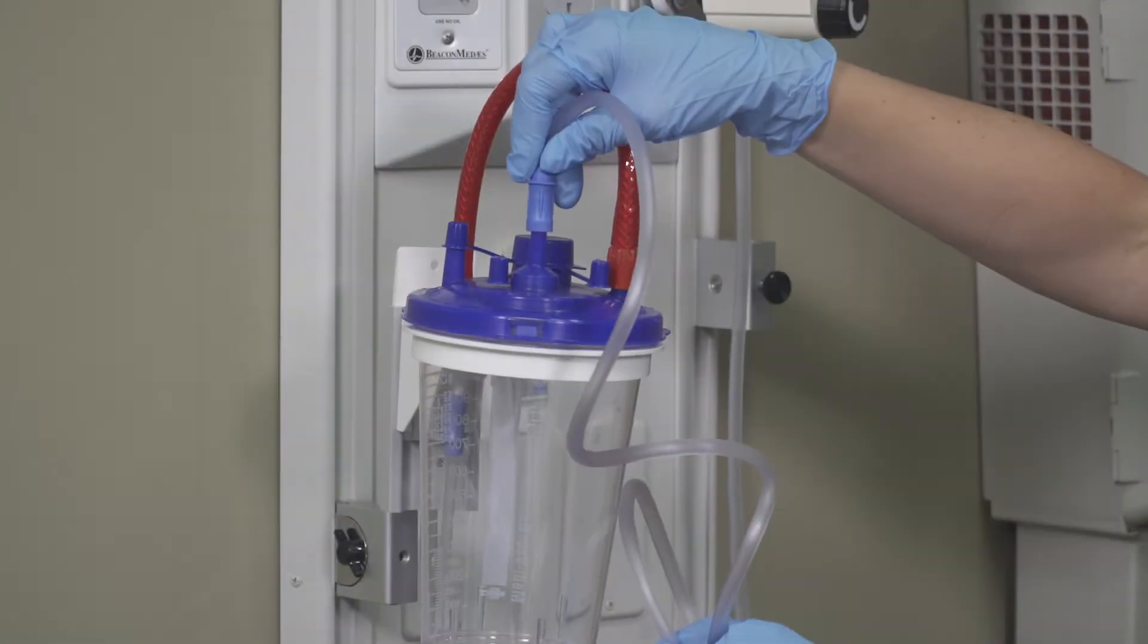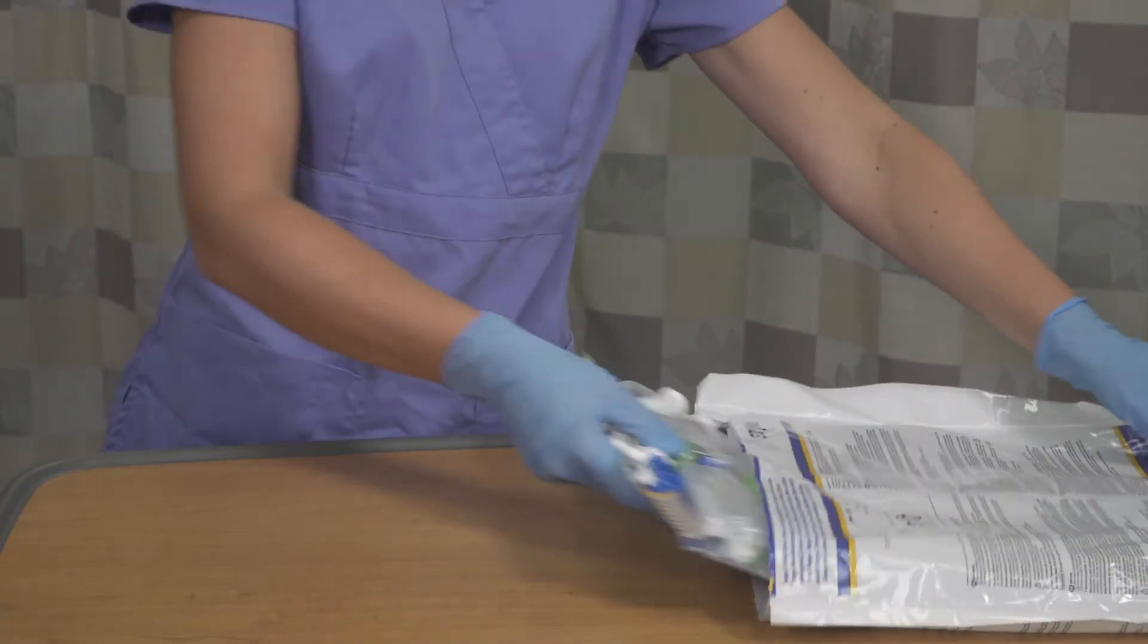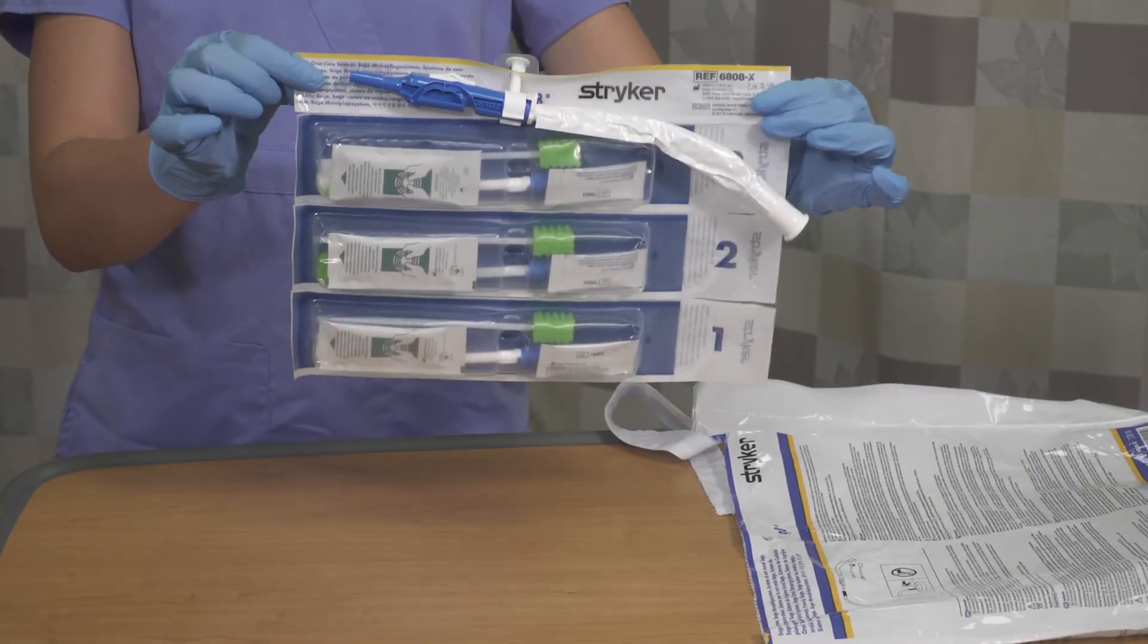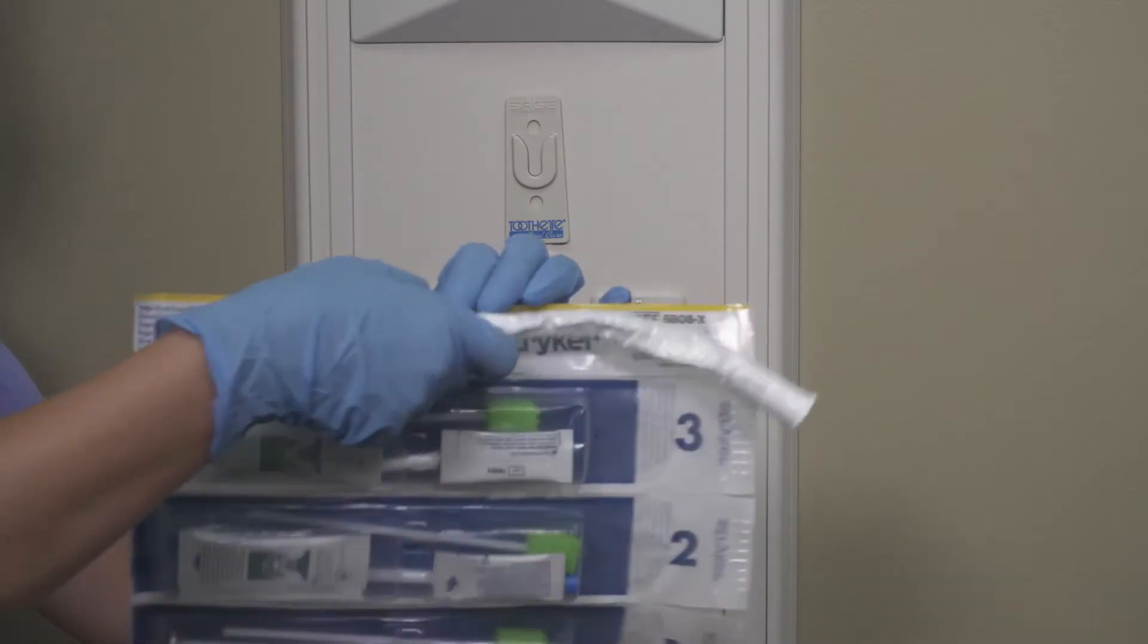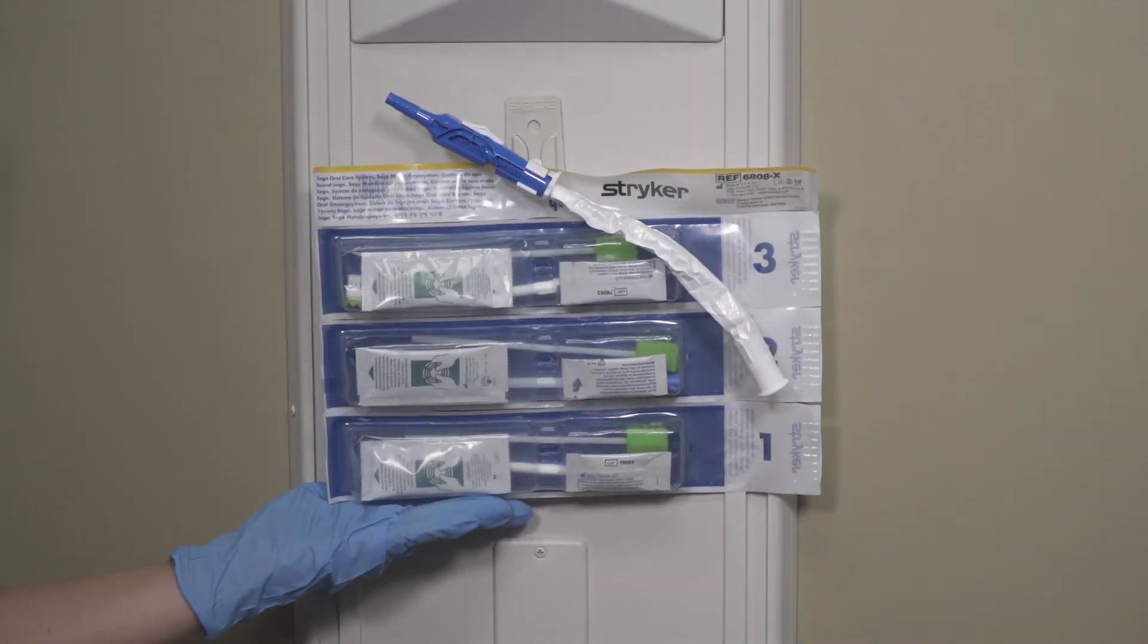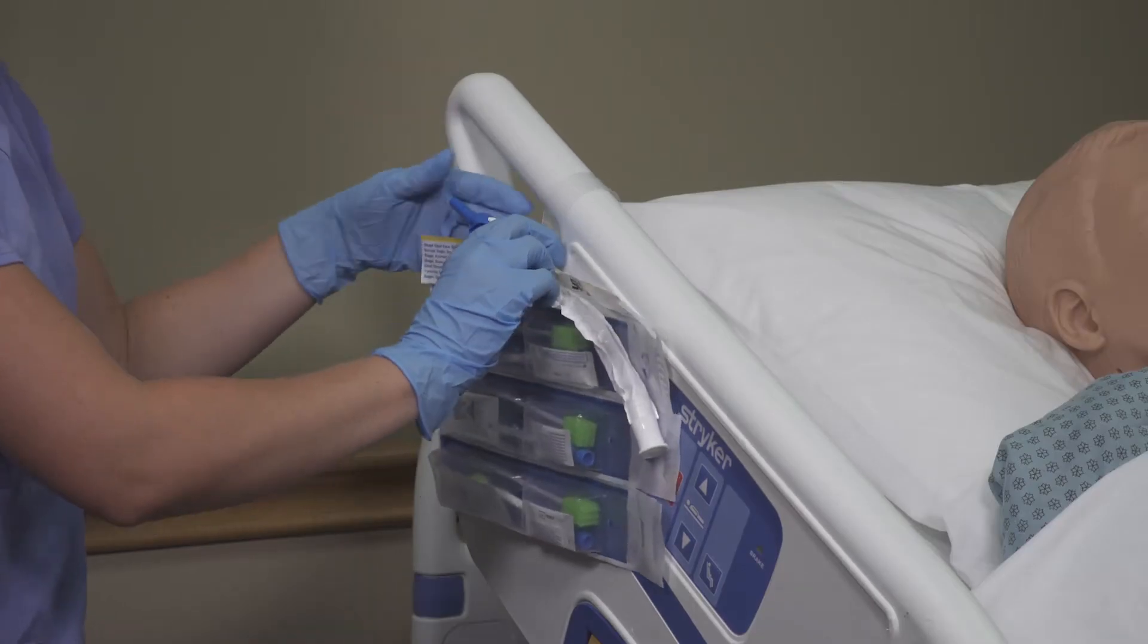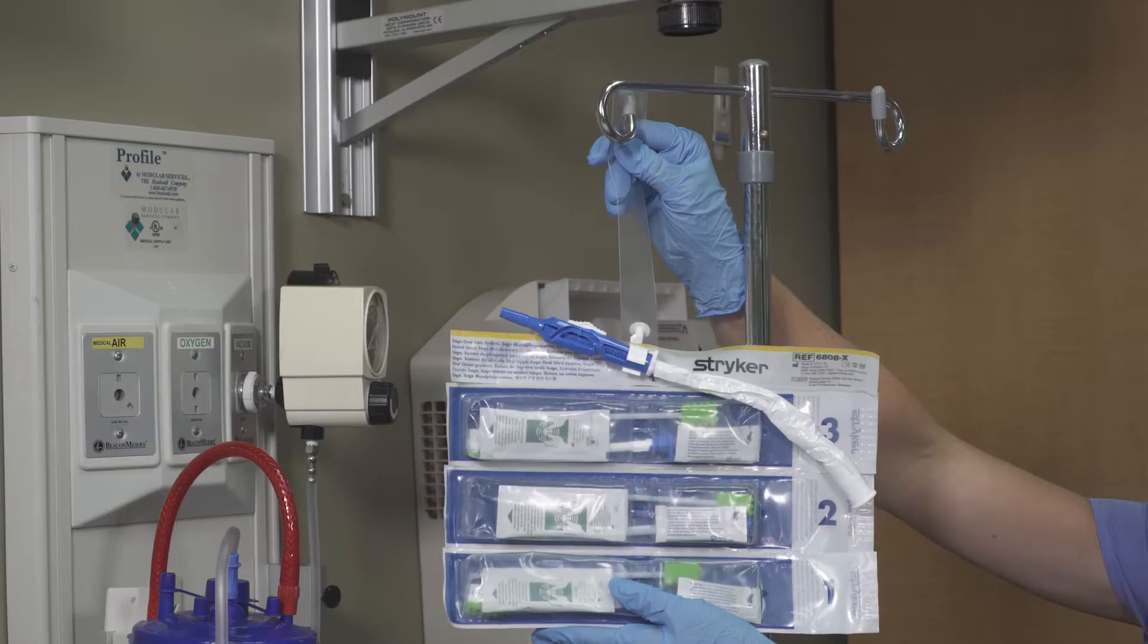To begin you will need a suction canister and an oral suction line. Open the bag and remove the Sage oral care system. If using a bedside bracket attach it to the wall. To hang, slide the white peg into the groove on the bedside bracket. Sage oral care system can also be hung on the bed rail or IV pole.